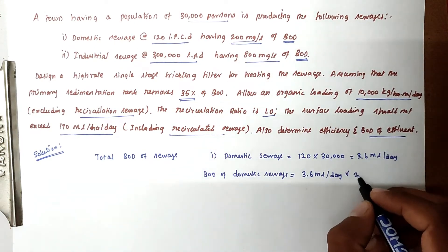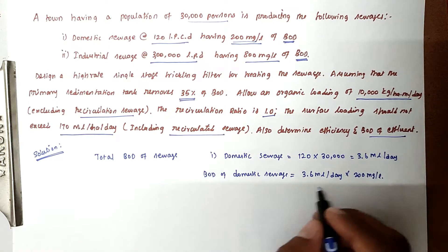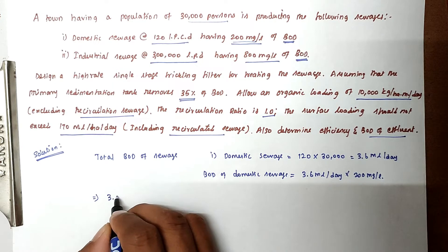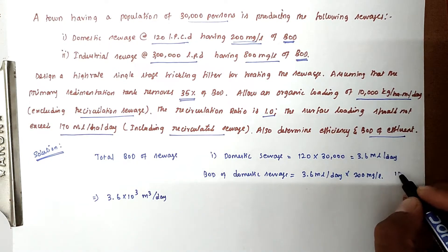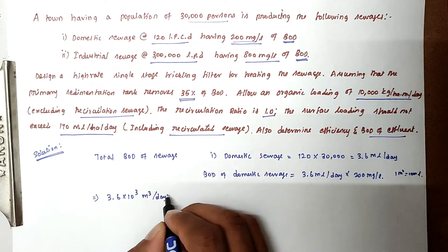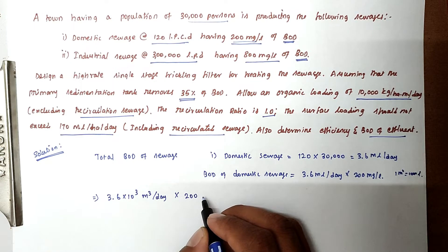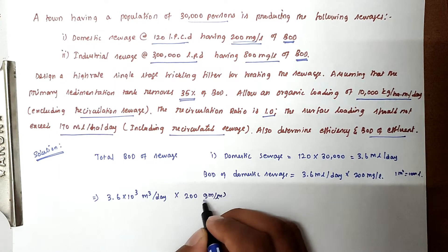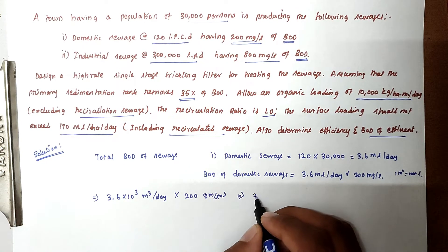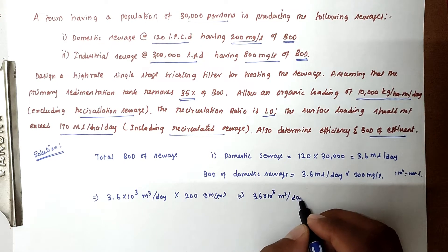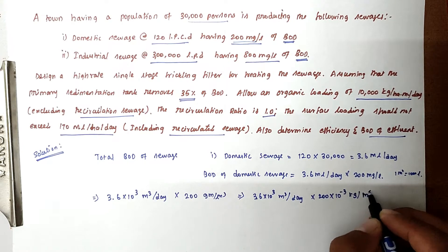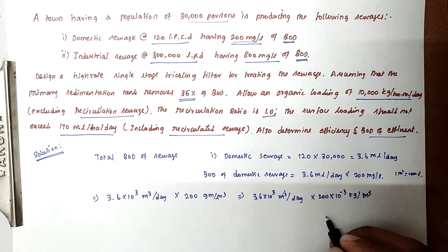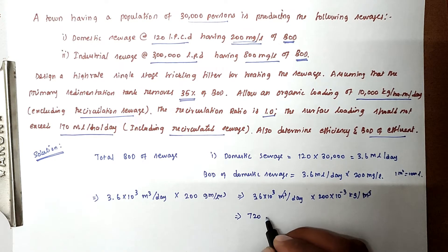The domestic sewage BOD equals 3.6 × 10³ m³ per day into 200 mg per liter, which we convert to grams per cubic meter and then to kg. So 3.6 × 10³ m³/day × 200 × 10⁻³ kg/m³. The cubic meter units cancel, giving us 720 kg per day for domestic sewage.